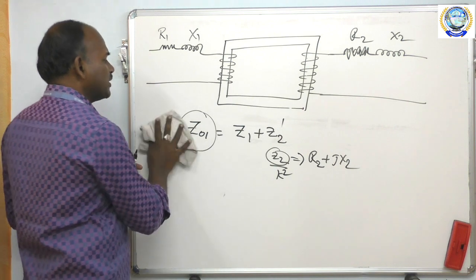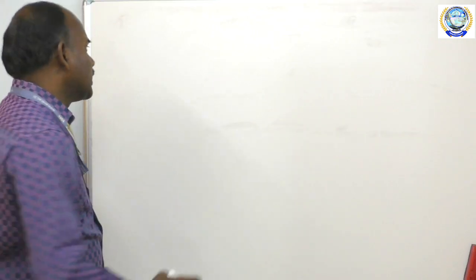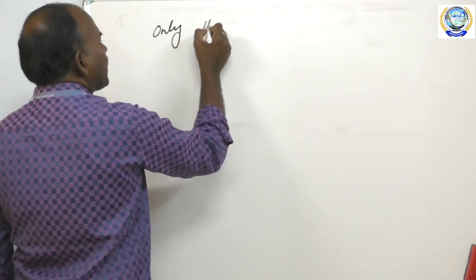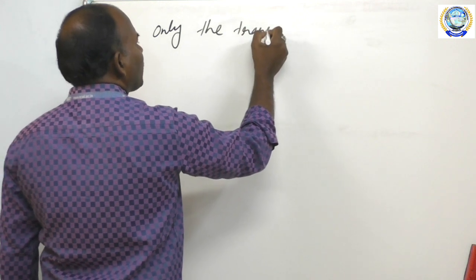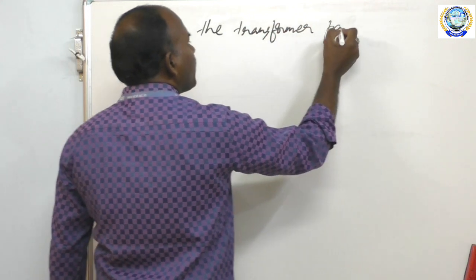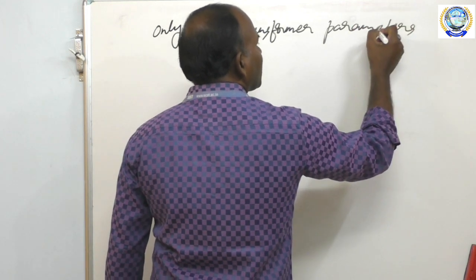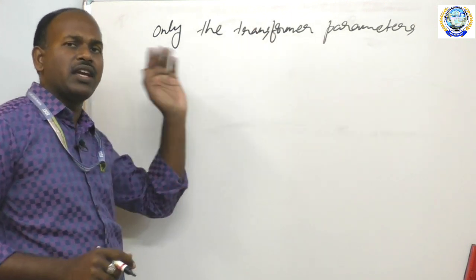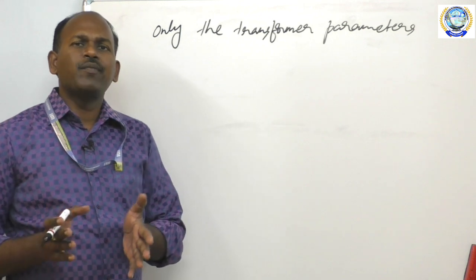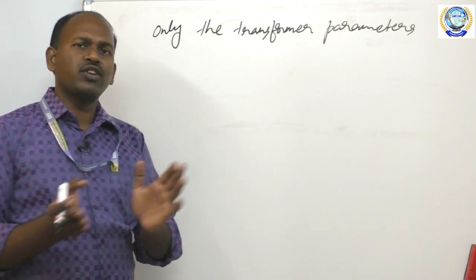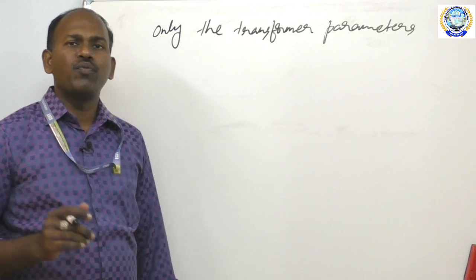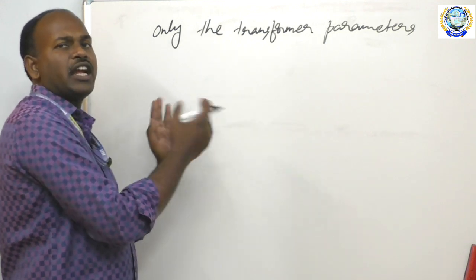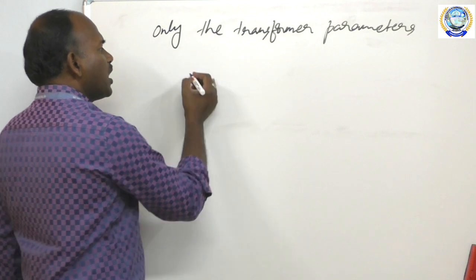What is the necessity of the equivalent circuit? The necessity is that calculations are made simple — the transformer parameters are taken as lumped quantities. That means the secondary side values also exist at the primary side. You are not physically moving the resistance, but for convenience we deal with the transformation from one side to another using the transformation ratio.